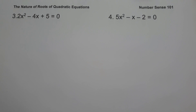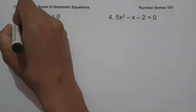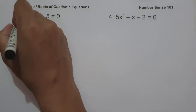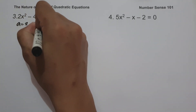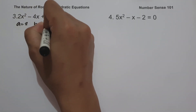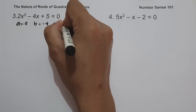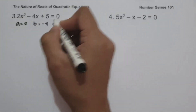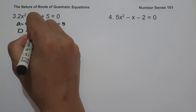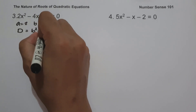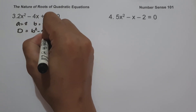On example number 3, we have 2x squared minus 4x plus 5 equals 0. So the value of a is 2, b is negative 4, and c is 5. And the formula for the discriminant is d equals b squared minus 4ac.